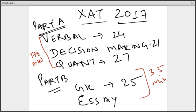The XAT 2017 paper is divided into two parts: Part A and Part B. Part A comprises three sections — verbal ability, decision making, and quantitative aptitude. Verbal ability has 24 questions, decision making has 21, and quant has 27. The total time given for Part A is 170 minutes. Part B comprises GK and an essay writing question, with GK having 25 questions and a total duration of 35 minutes. Your XAT percentile is based solely on your marks in Part A.